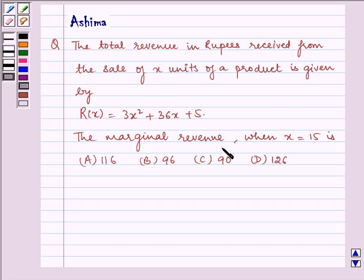The marginal revenue when x equals 15 is: (a) 116, (b) 96, (c) 90, or (d) 126.